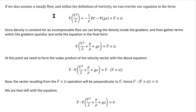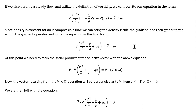For steady flow, utilizing the definition of vorticity, we can rewrite the equation in a new form — substituting omega for the del cross v term. Since density is constant for incompressible flow, we can bring rho inside the gradient operator and gather all terms operated on by the gradient operator. We're starting to look like Bernoulli's equation, with a v cross omega term remaining on the right-hand side.